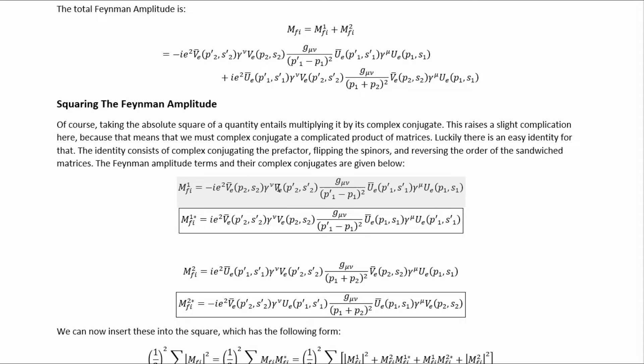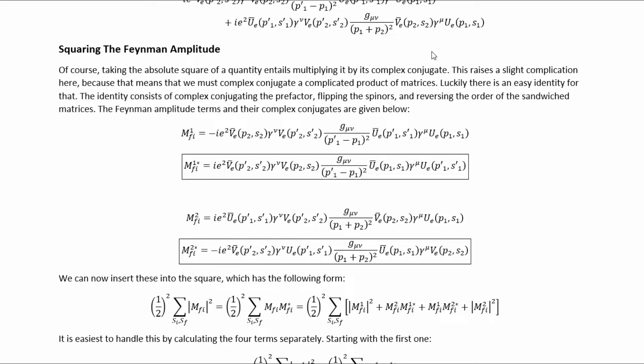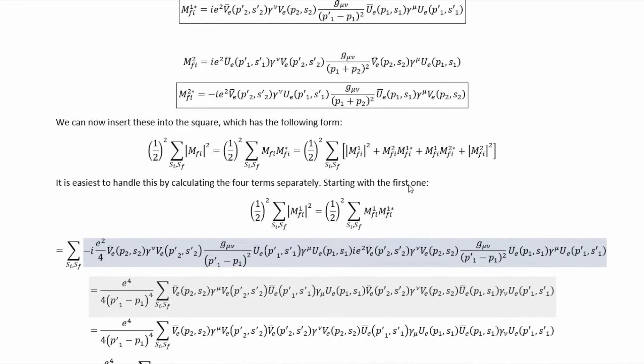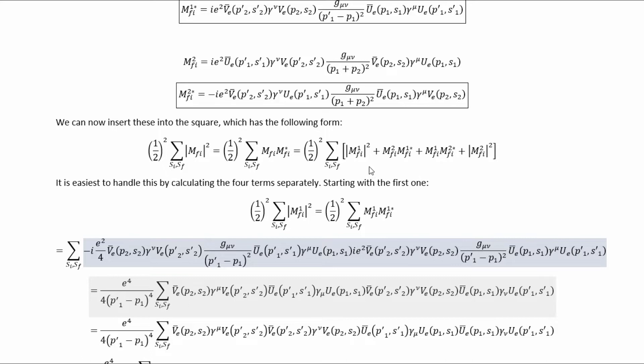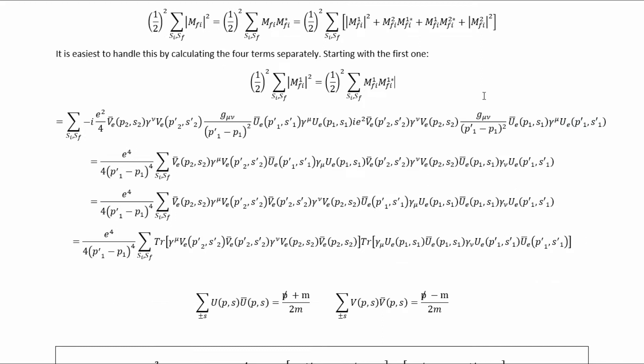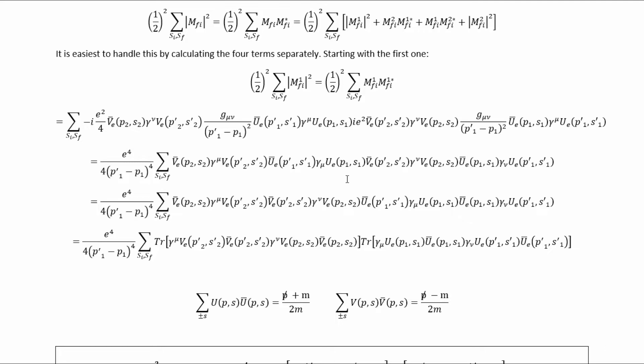The identity for complex conjugating the Feynman amplitude terms consists of complex conjugating the pre-factor, flipping the spinors, and reversing the order of the matrices sandwiched in between. Because there's only one matrix in each term, there is not really much order to reverse, so we get straightforward results for the complex conjugated terms. The square we want to calculate has four terms: two of the form of the modulus squared of each contributing Feynman amplitude term, and two cross terms. Let's handle the first modulus-squared term by plugging in the relevant factors.